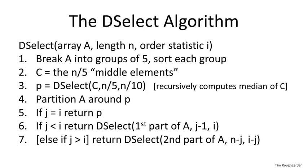Lines one through three are the new choose-pivot subroutine, and it's essentially implementing a two-round knockout tournament. So first we do the first round matches. That means we take A and think of it as comprising groups of five elements: elements one through five, then six through ten, eleven through fifteen, and so on. We sort each of those groups using, say, merge sort, although it doesn't matter much.